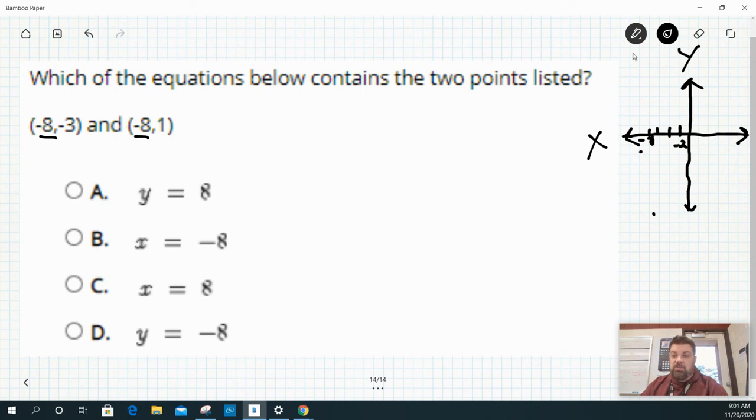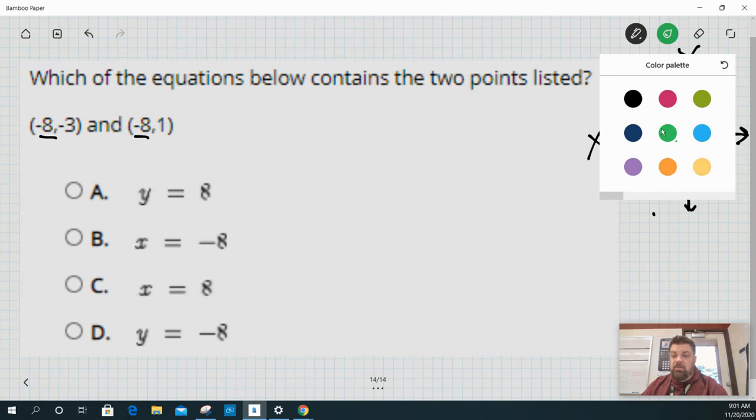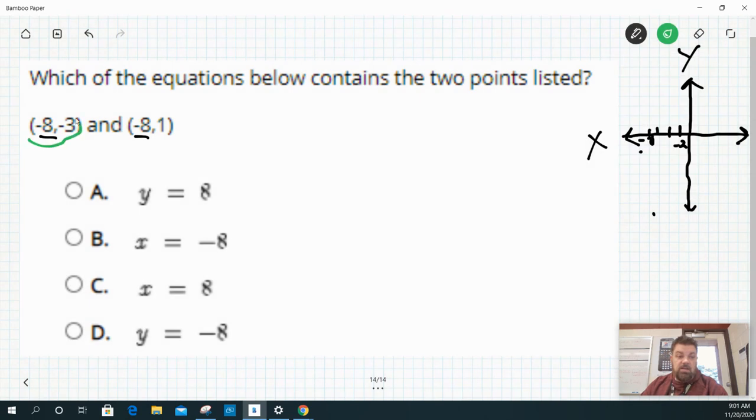So what I'm going to do is just graph these two points. The first point I'm going to graph is (-8, -3). So I'm going to go over negative 8, and then I'm going to go down 1, 2, 3. You can change the scale on a graph any way you want. So this point here is (-8, -3).